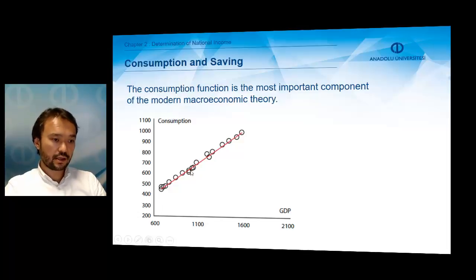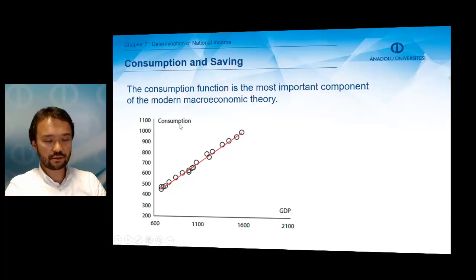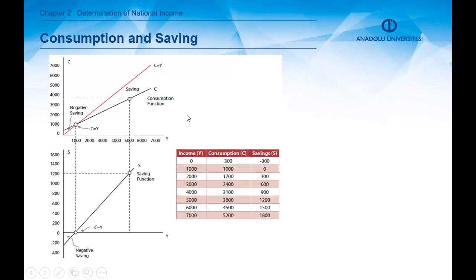This figure shows the powerful relationship between consumption and income for an economy — specifically for the Turkish economy. In our textbook we can see this relationship between consumption and income; the consumption function shows this relationship.